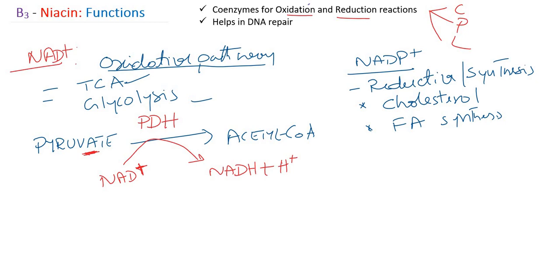Similarly, for the reductive pathway — cholesterol synthesis, fatty acid synthesis, and even the HMP shunt pathway — NADP+ is utilized.